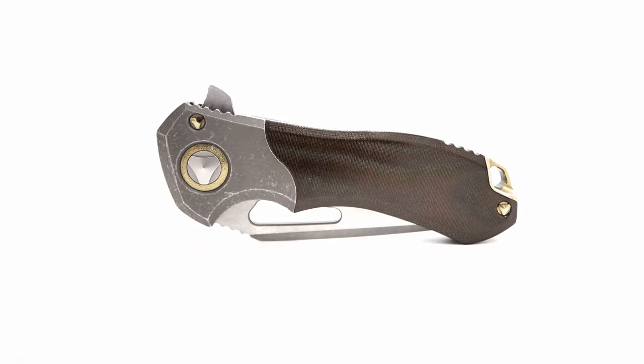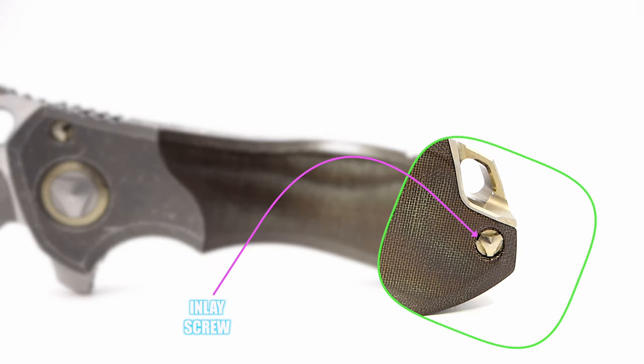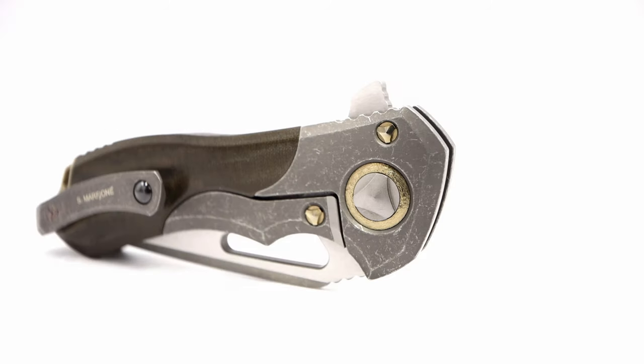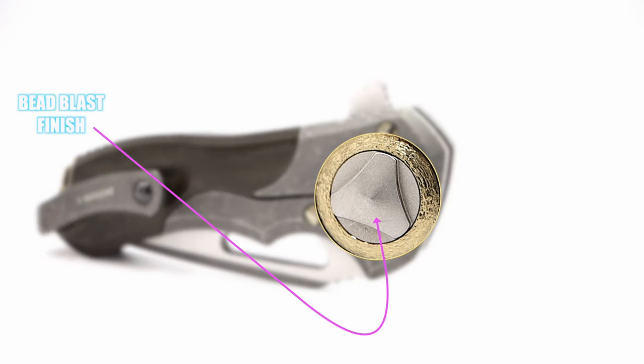All the body screws, lock bar insert screws, stop pin pair, and inlay screws have been anodized to this color, as well as the pivot collar that has also received the apocalyptic finish. The oversized pivot has what I believe to be a bead blast finish.